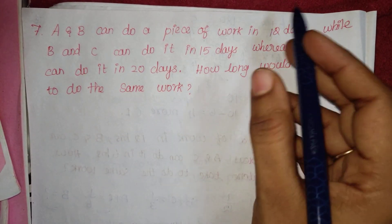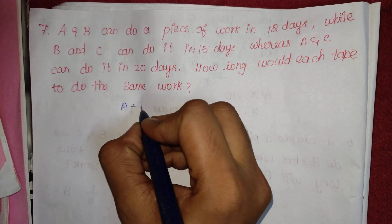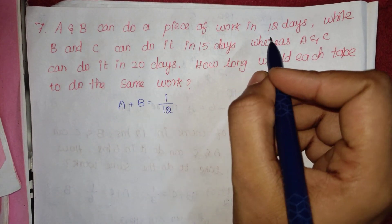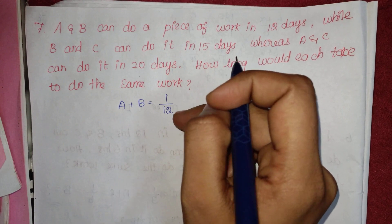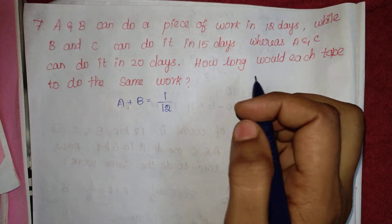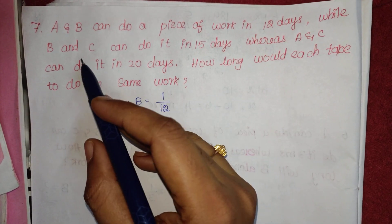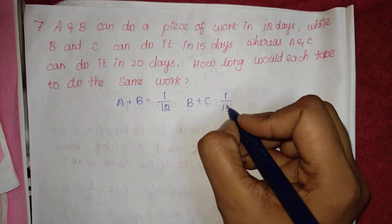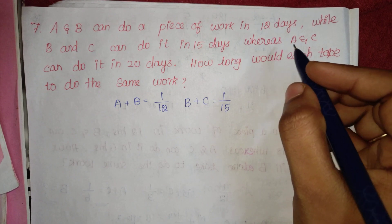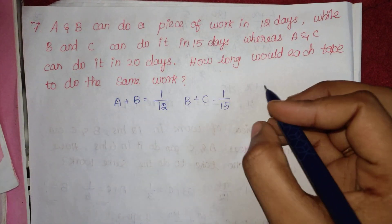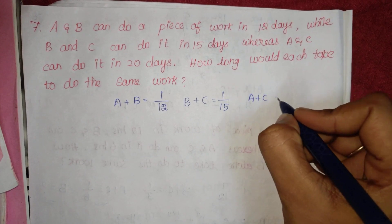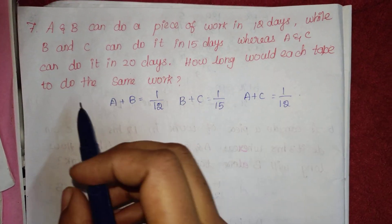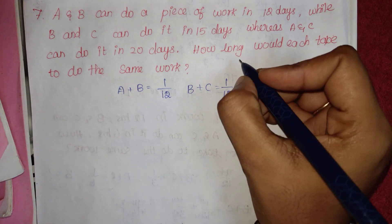A and B can do a piece of work in 12 days. B and C can do the same work in 15 days, so that's 1 by 15. Whereas A and C can do it in 20 days, so that's 1 by 20. How long would each take to do the same work?